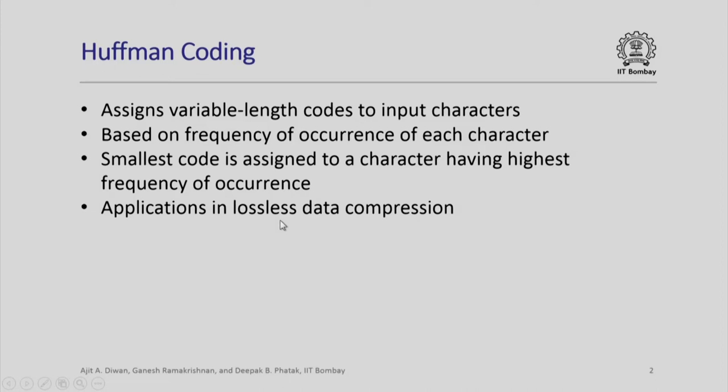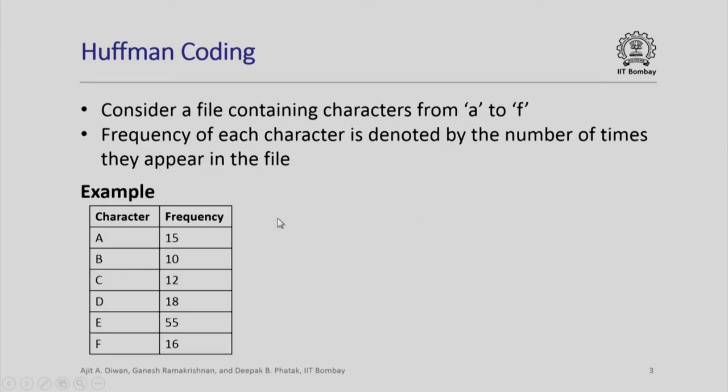Let us look at how the Huffman code is structured. Consider a file which contains different characters between A to F and consider that the frequency of each character is actually counted by the number of times they appear in the file. Let us assume these characters appear in this file: A appears 15 times, B appears 10 times, etc. Notice that E appears 55 times. B appears the smallest number of times and E appears the largest number of times. Different characters appear for different numbers of times.